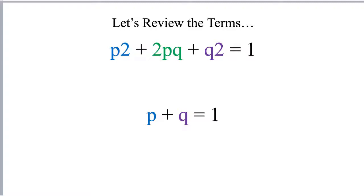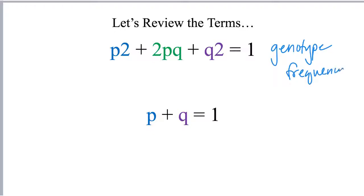Before we begin our example, let's review the terms involved with Hardy-Weinberg equilibrium. One of the biggest challenges when working through Hardy-Weinberg problems is remembering which term is which and figuring out what exactly you are trying to solve for. The Hardy-Weinberg equation shows the frequency of genotypes in a population, while p and q, adding up to 1, represent allele frequencies in the population.